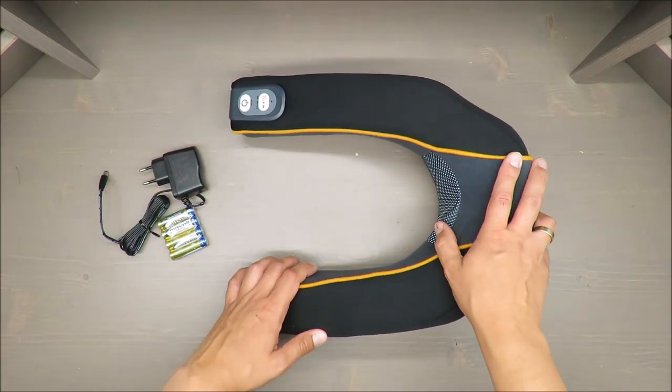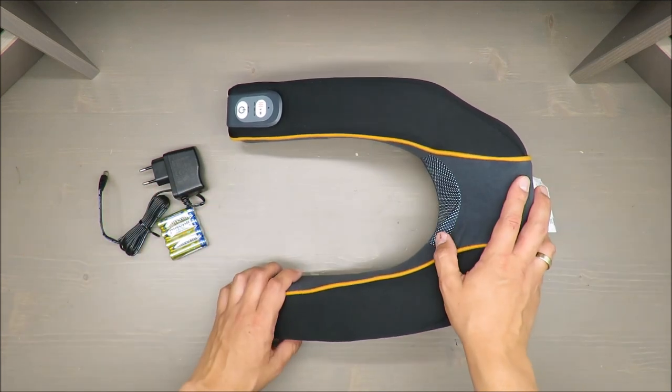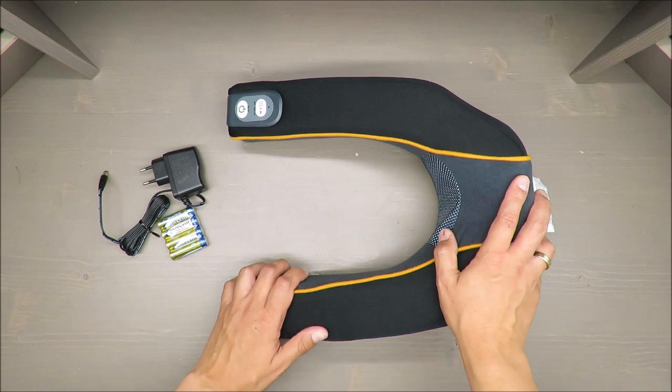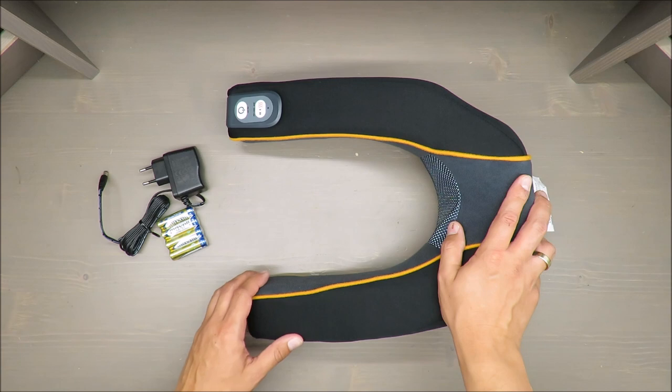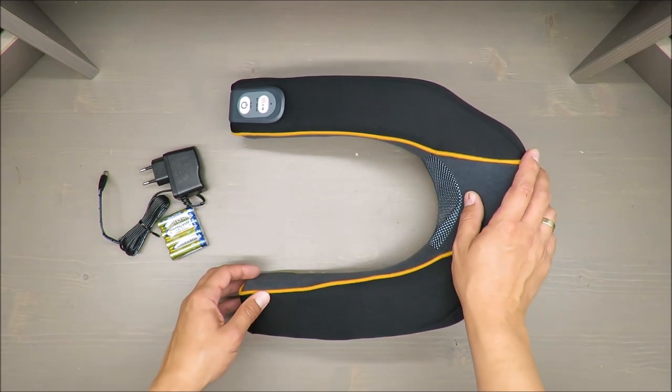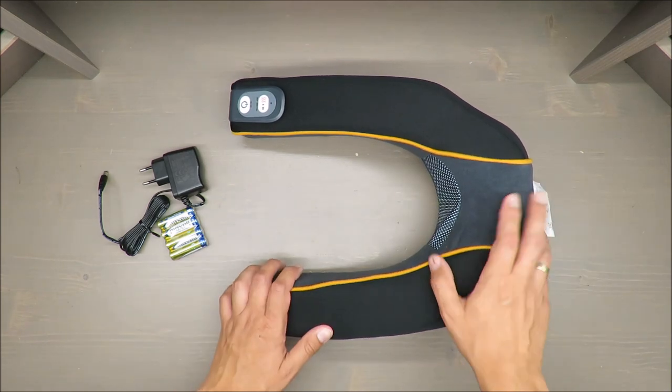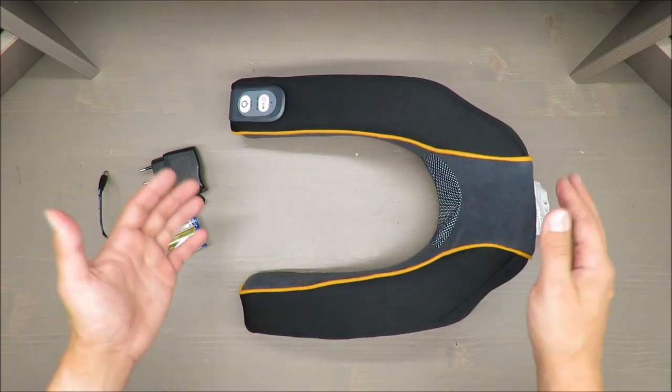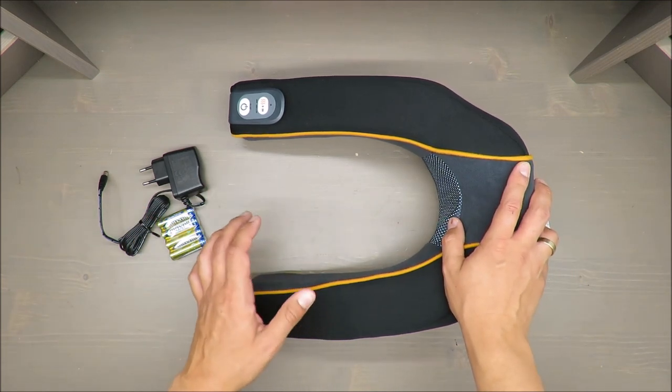So basic features: it's a neck massage cushion with two settings for neck and shoulders. It has, as the producer claims, optional red light and heat function. This is part of my negative judgment because, as far as I have noticed, it's not working. I mean, it's not heating.